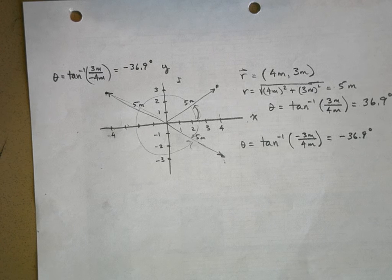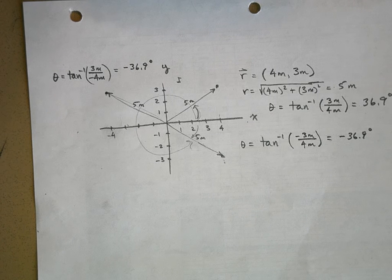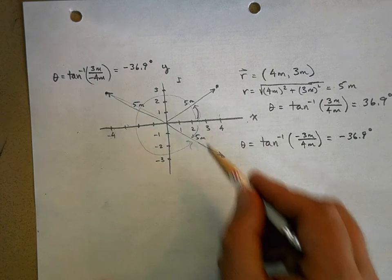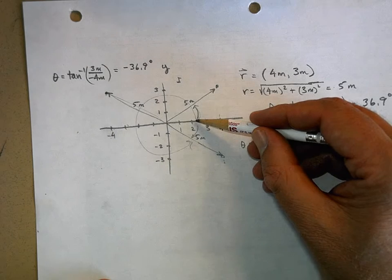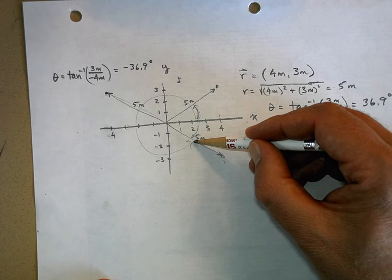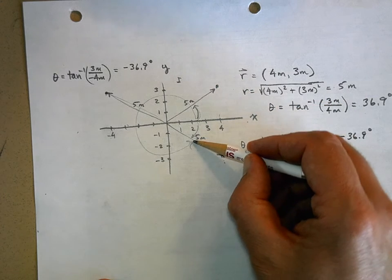But that's the wrong answer. That's not where that object is. It's 5 meters away, but not at negative 36. Where is it? I'd go negative 36.9 degrees.